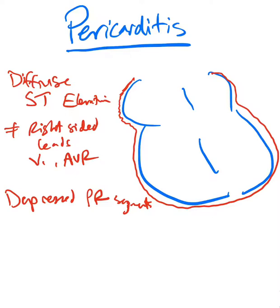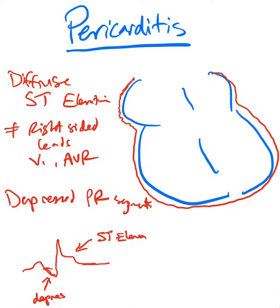Let me show you how this looks on an EKG. You have a P wave, and then you'll see it actually drops — that's the depressed PR. Then there's a QRS, followed by an ST elevation. Whenever you are comparing those segments, make sure you compare to the TP segment — the T and P segment — not the previous PR. That gives you the true baseline reference.